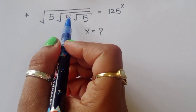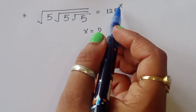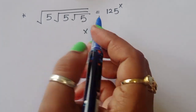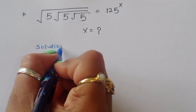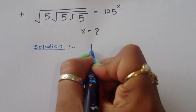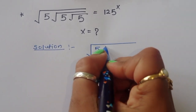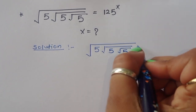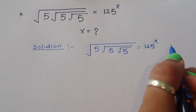Square root of 5 under square root of 5 under square root of 5 is equal to 125 power x. We have to find out the value of x. Let's see the solution.